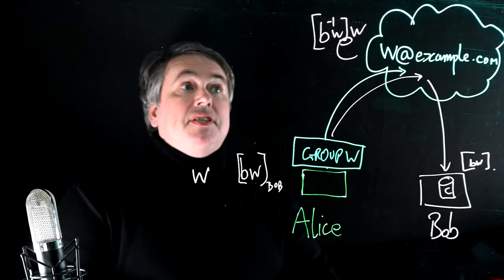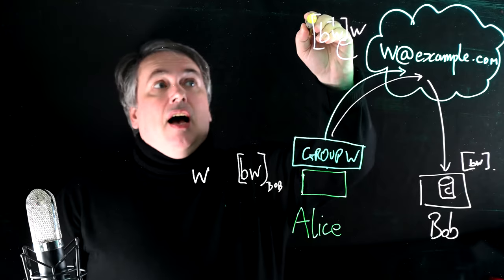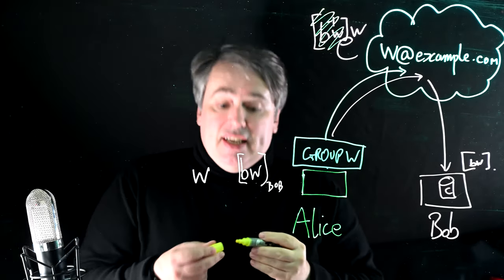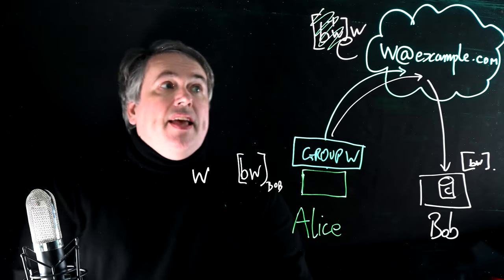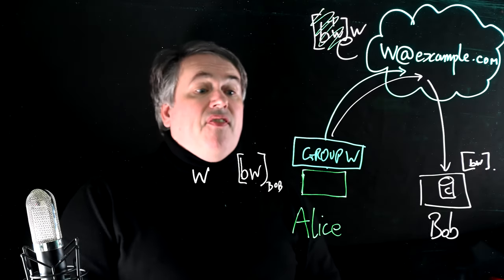The service is going to put this entry into the group membership catalog of Group W. That's basically all that Group W consists of, a catalog showing the members of the group, and that is sufficient to create a group encryption capability.